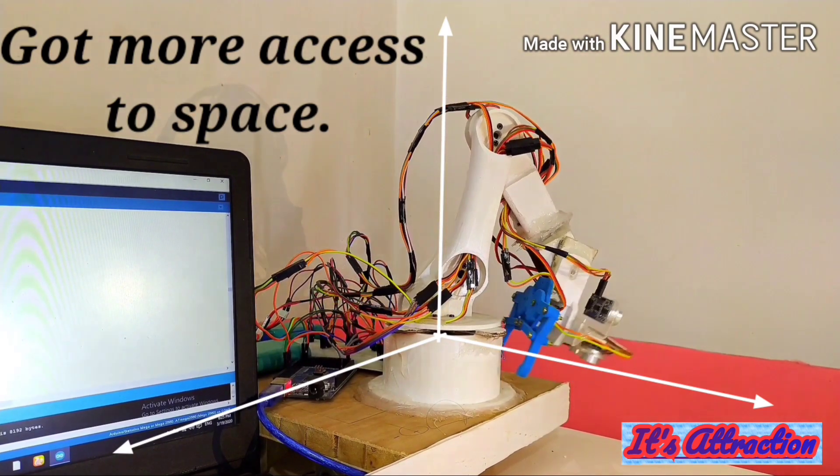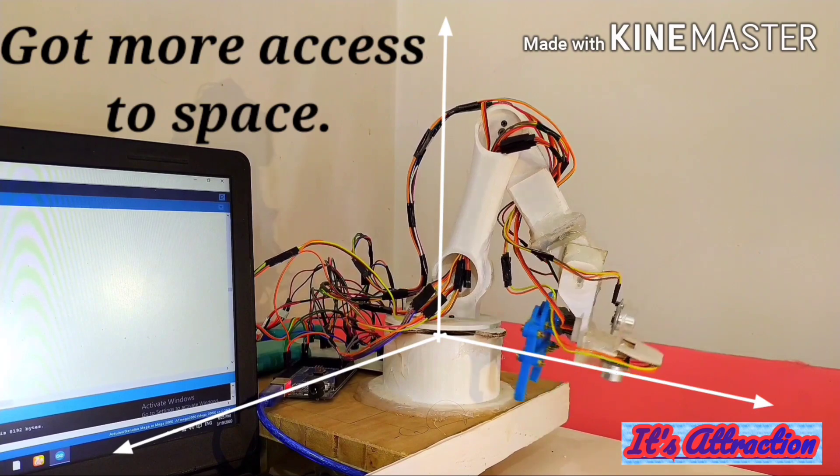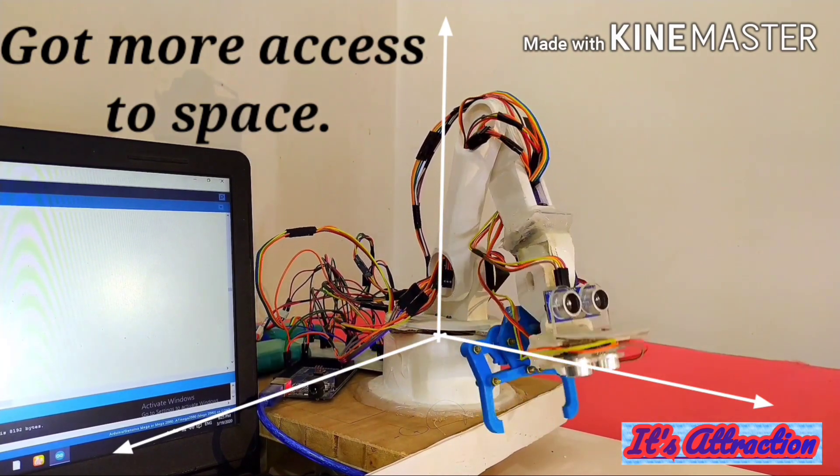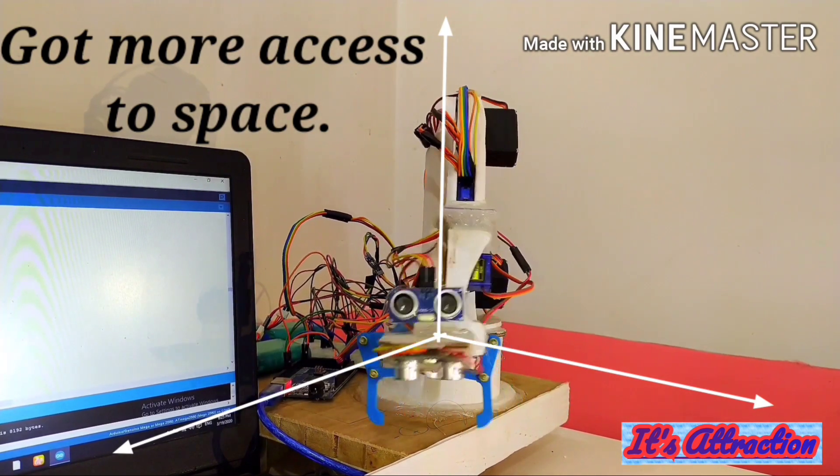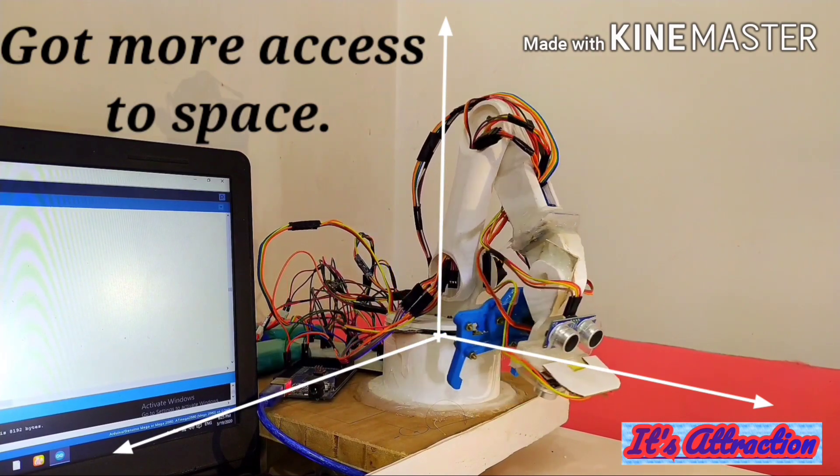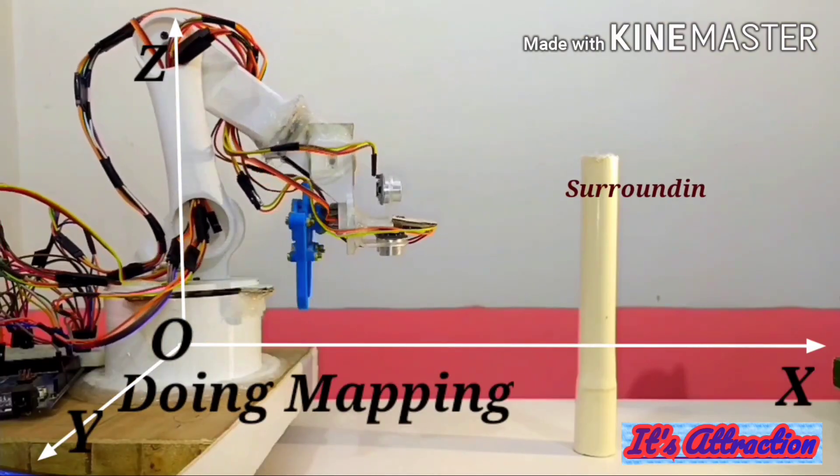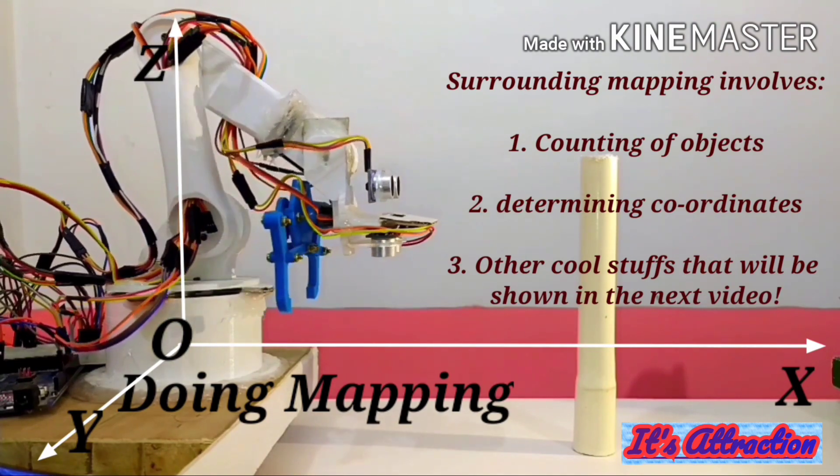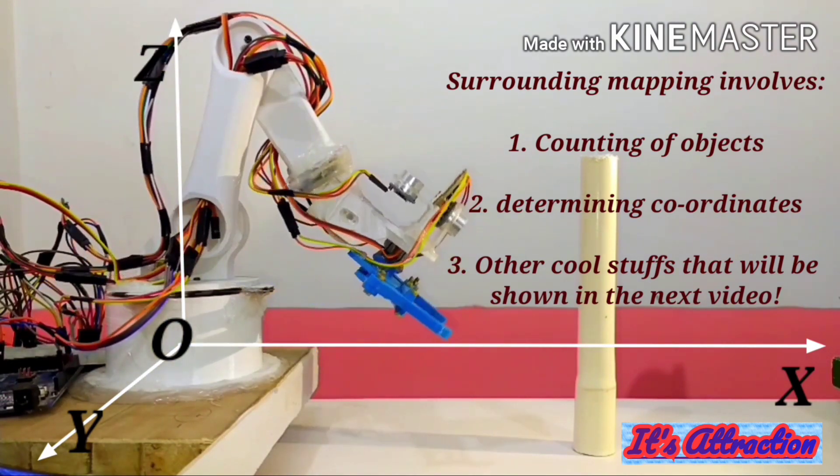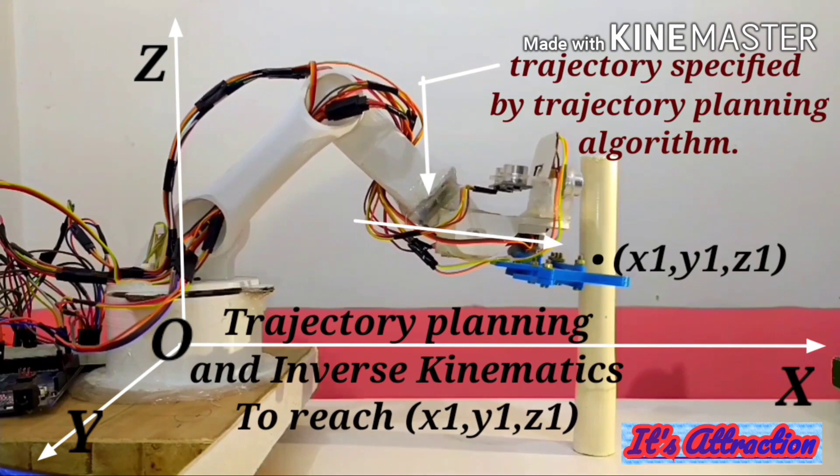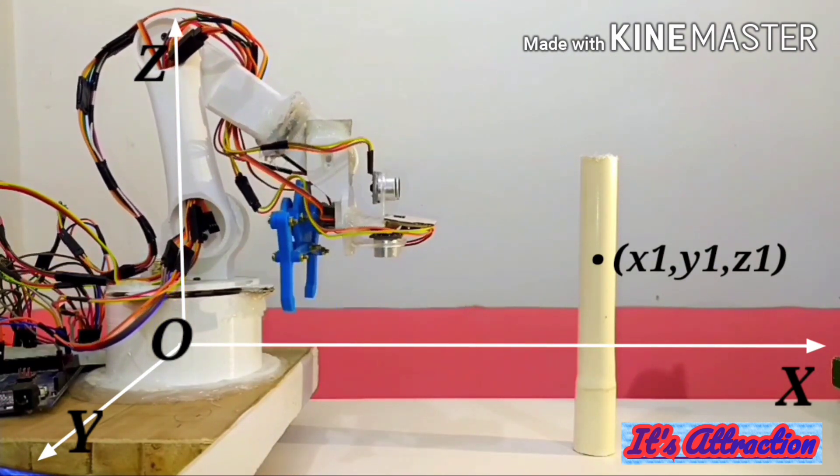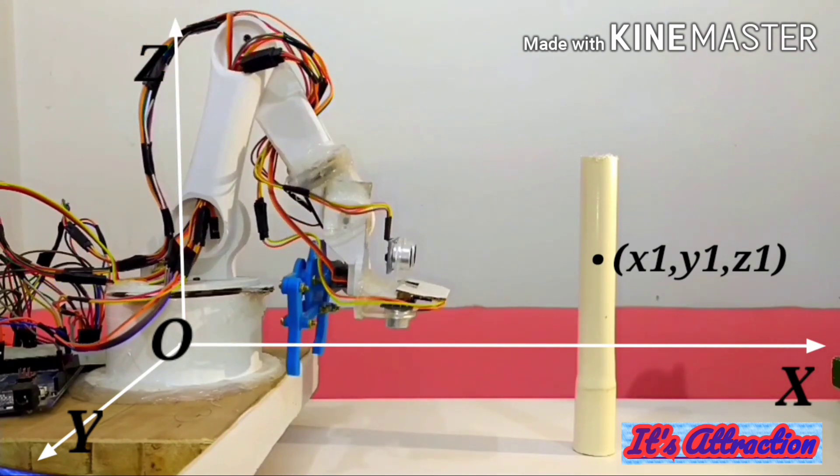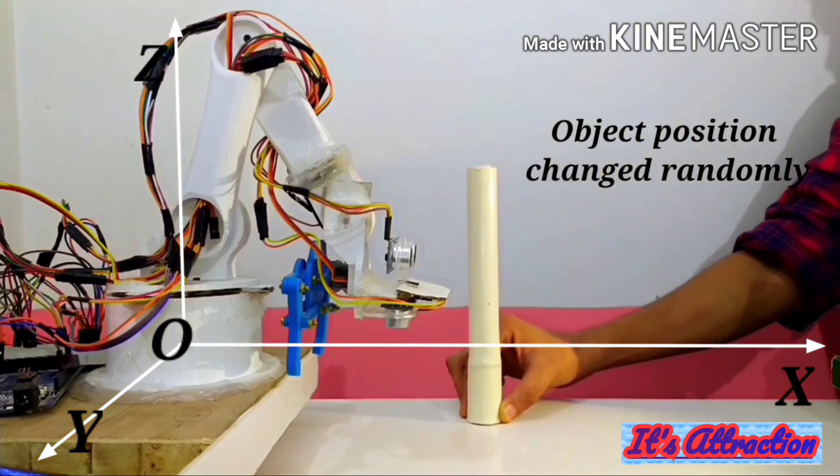This robotic arm can even map the surrounding by counting the number of objects that lie in its vicinity and also determining their respective polar as well as Cartesian coordinates. Mapping of the surrounding and inverse kinematics detailed video will be uploaded in the second part, as this video is going to be all about trajectory planning.